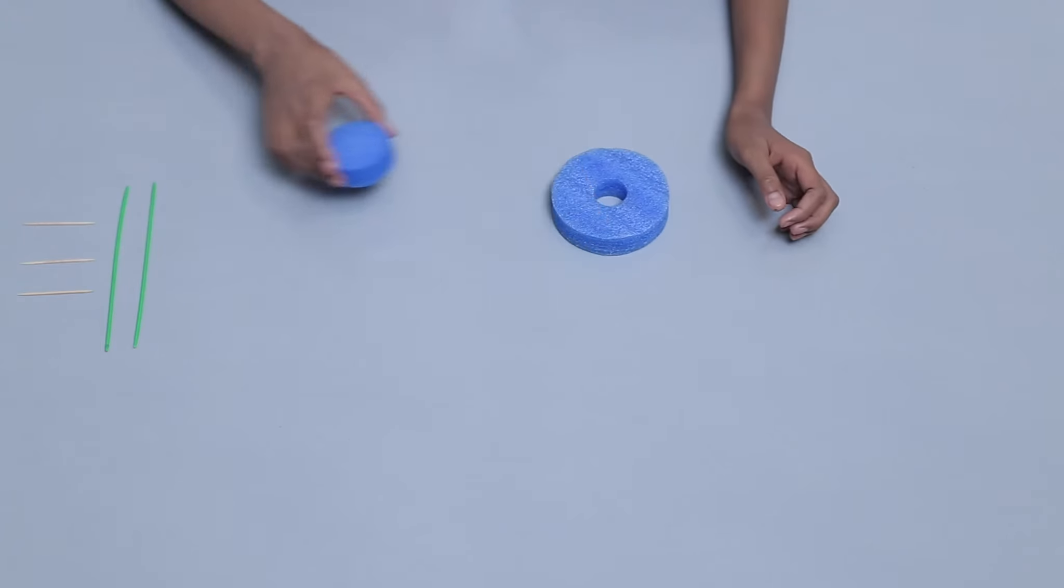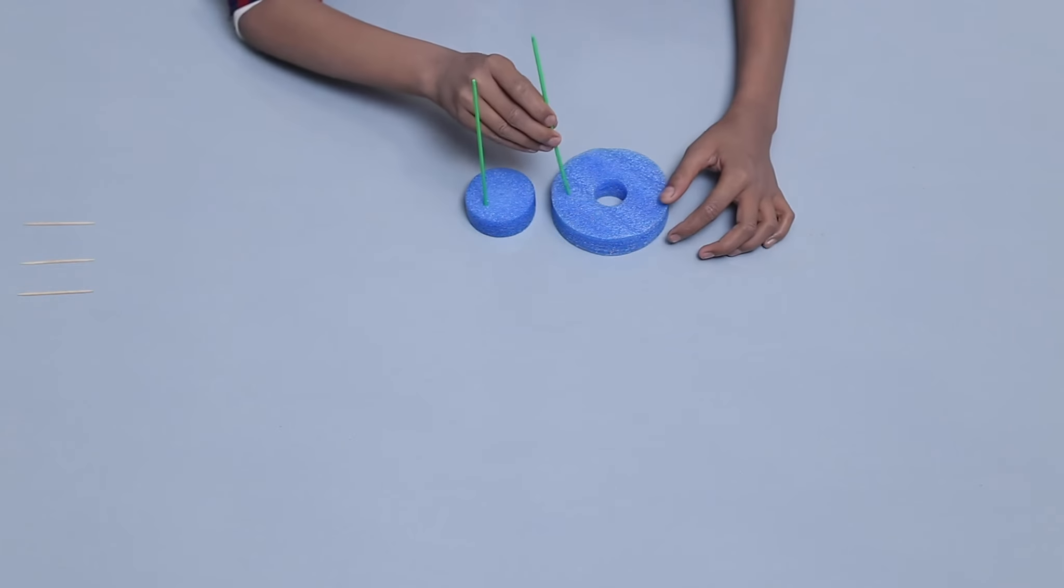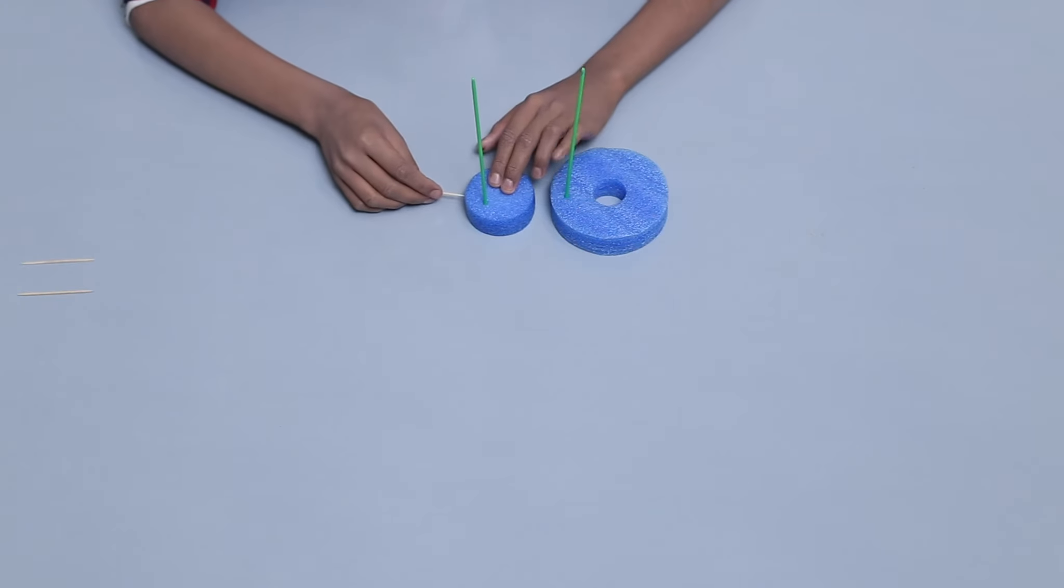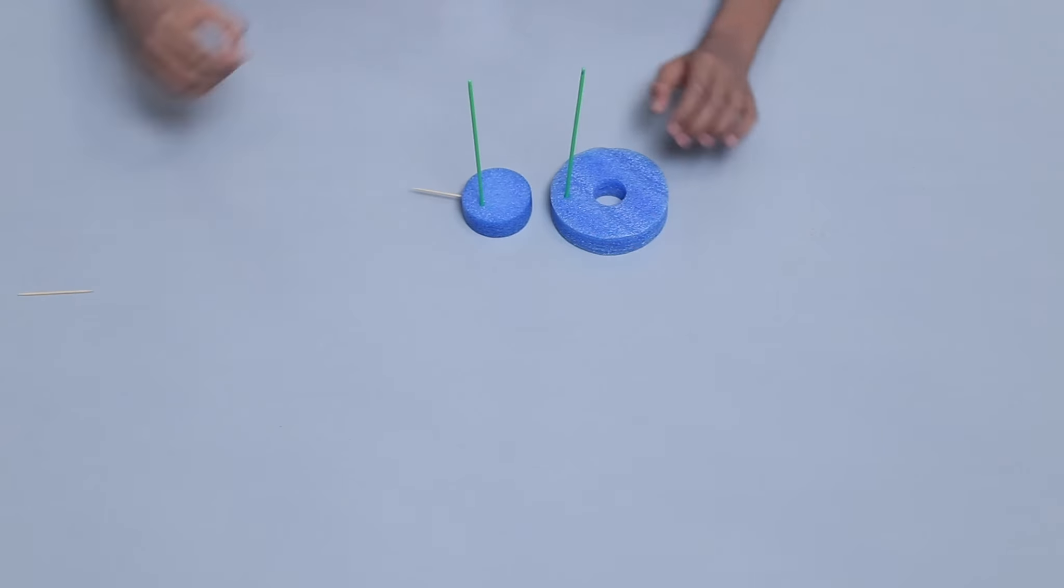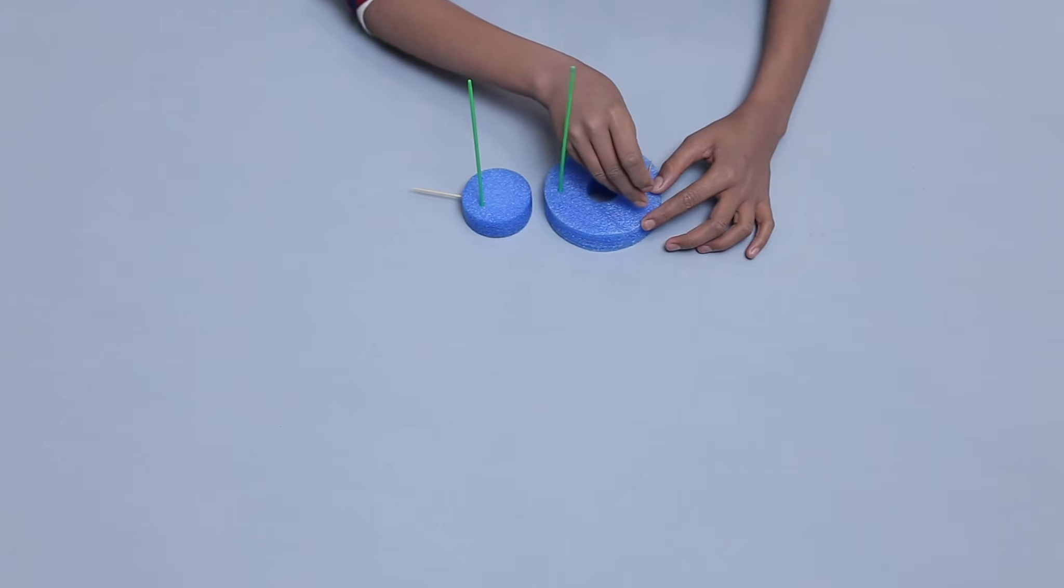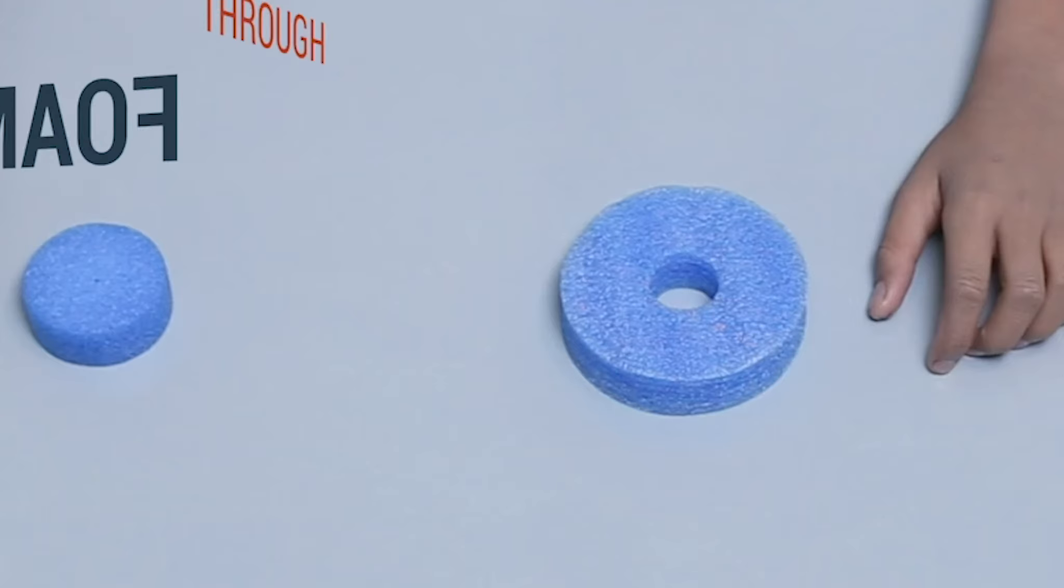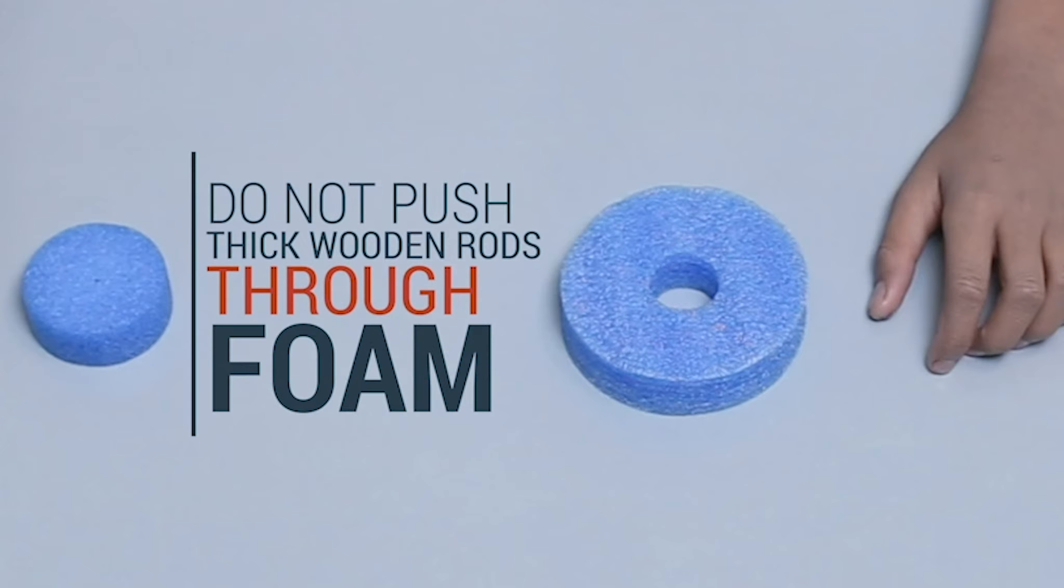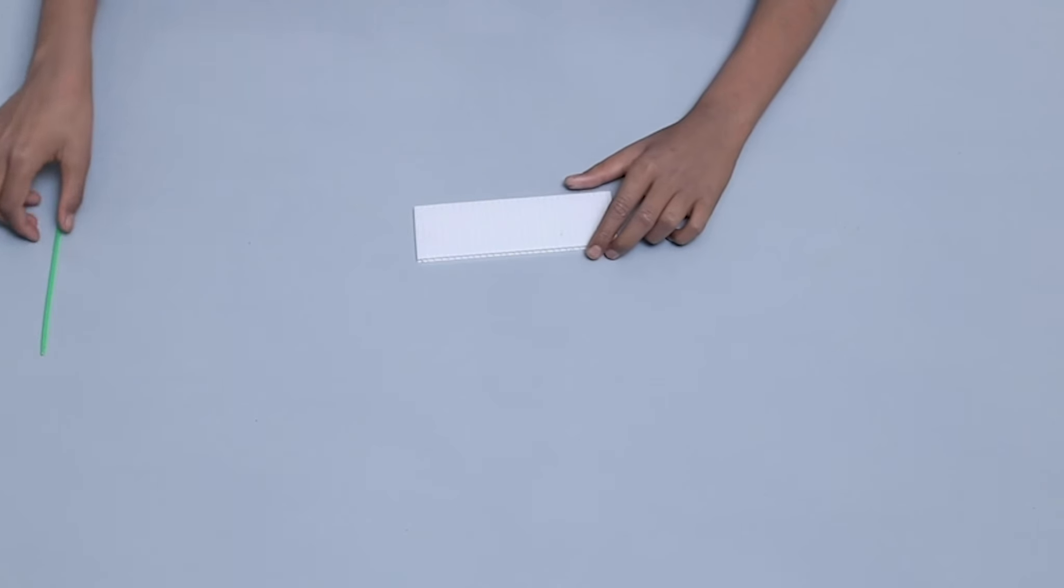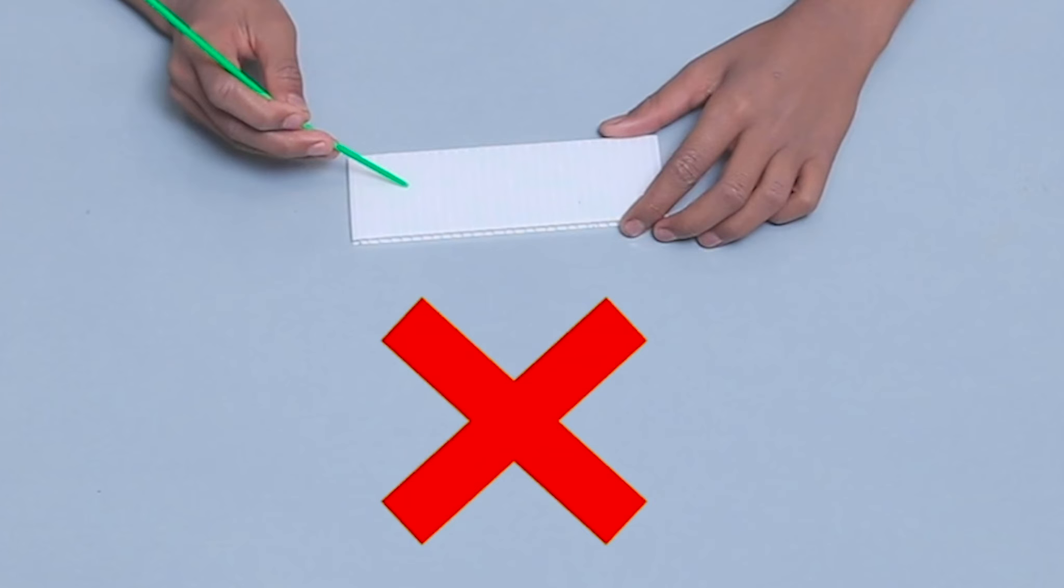So for this, find foam pieces in the kit. You can gently push plastic sticks and toothpicks into them. Do not push the thick wooden rods through the foam. It will damage the foam. You cannot stick plastic sticks, toothpicks, and wood sticks into the cardboard.